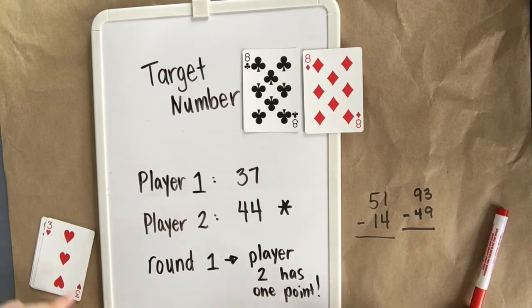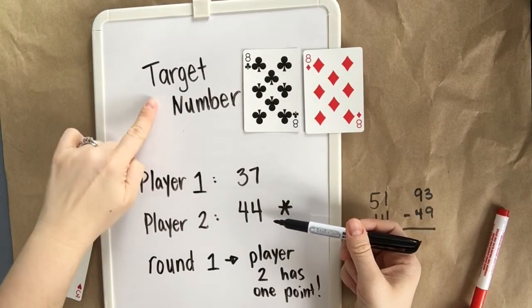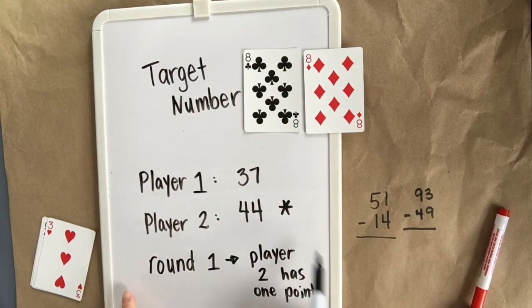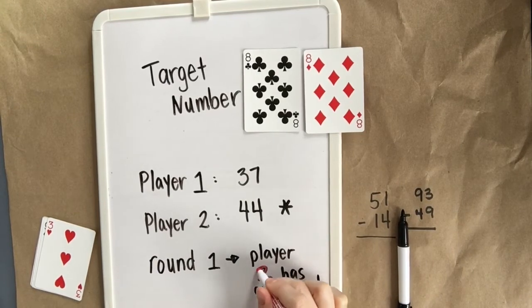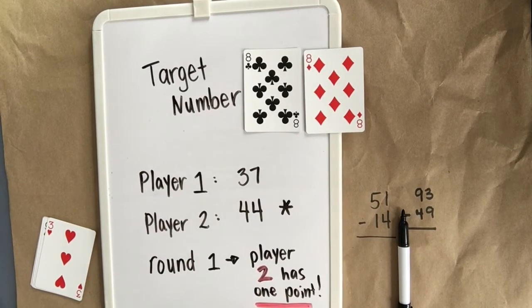Remember that our target number was 88. Player 1 had 37. Player 2 had 44. In round 1, player 2 has 1 point because they were closer to 88. You can play this for a few more rounds if you'd like.